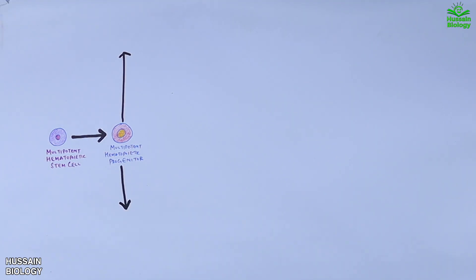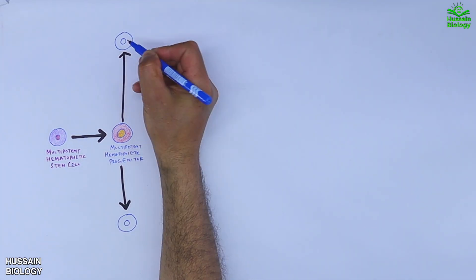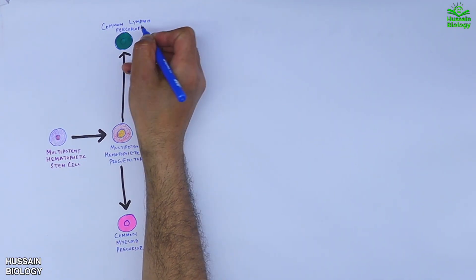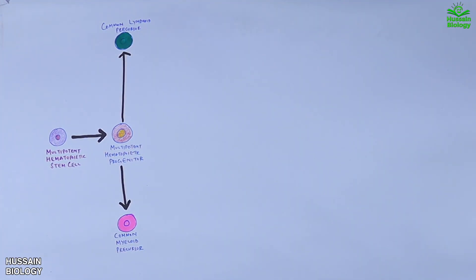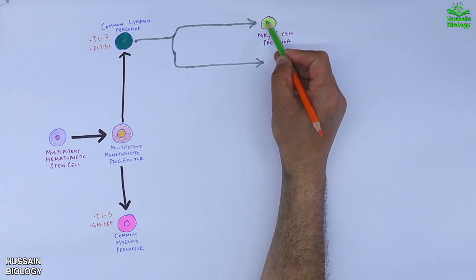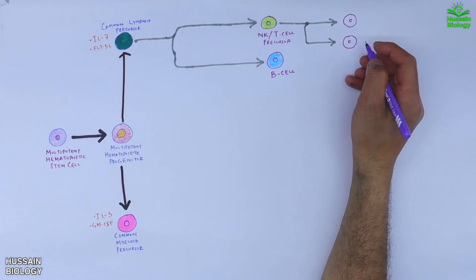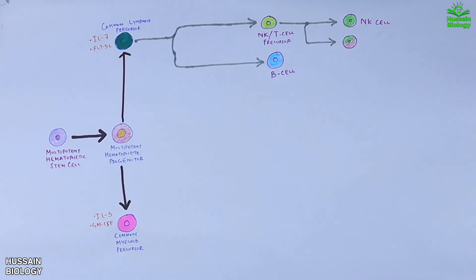From here, the progenitor cell splits into two main paths: one leads to the common myeloid progenitor, and the other to the common lymphoid progenitor. The common lymphoid progenitor cell diversifies into NK cell, T cell precursor, and B cell. The T cell precursor then differentiates into NK cell and T cell, as shown in the diagram.